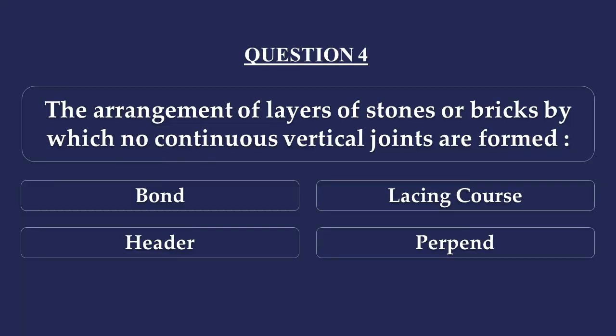Question number 4. The arrangement of layers of stones or bricks by which no continuous vertical joints are formed is known as: Option A - Bond, Option B - Lacing Courses, Option C - Header, Option D - Perpend. The answer is Option A: Bond.